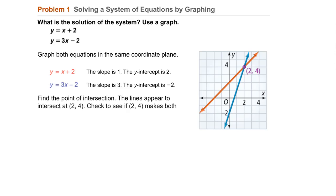Next, we want to find the point of intersection, because that is the solution of the system. The lines appear to intersect at the point (2, 4). So we'll check to see if the point (2, 4) makes both equations true.